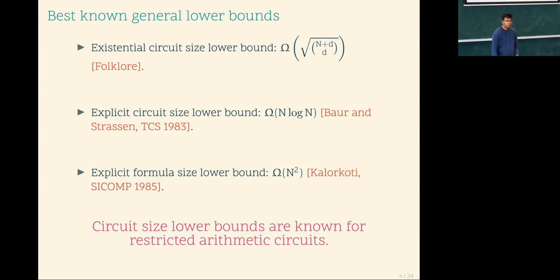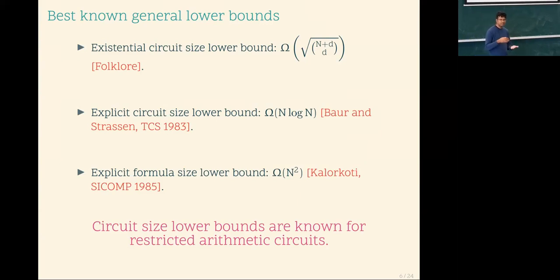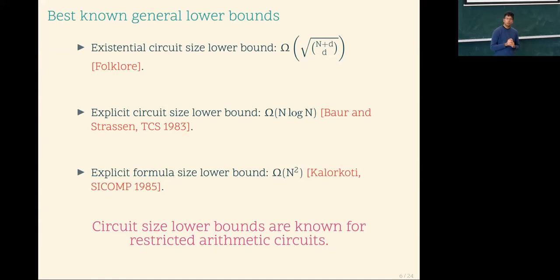Back in the 80s and 90s, a lot of Boolean circuit complexity researchers focused on constant-depth circuits — AC0 and AC0 with parity — and started getting more and more results. However, results have slowed down over the last 40 years. In 1992, Razborov wrote a paper asking why Boolean complexity is so difficult. If you want to prove P versus NP, circuits are a natural way to think about functions, and every function can be computed by Boolean circuits.